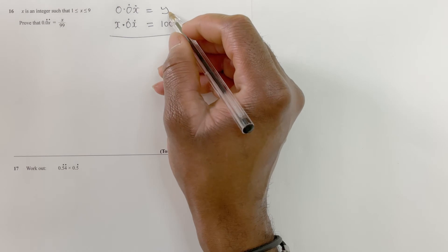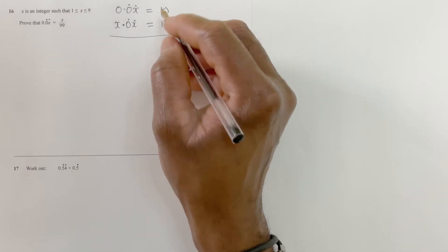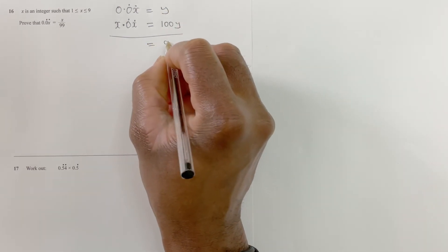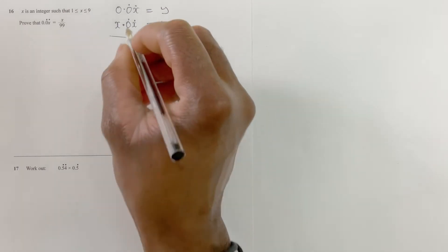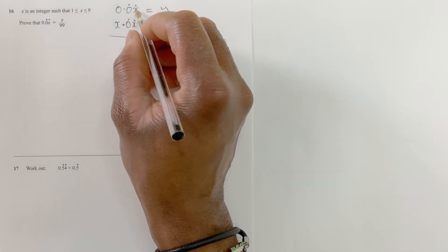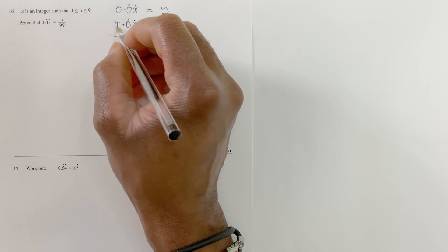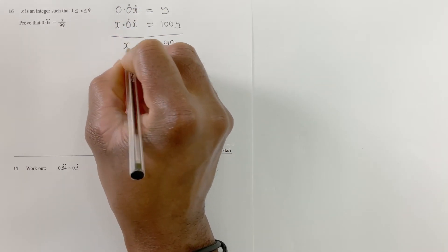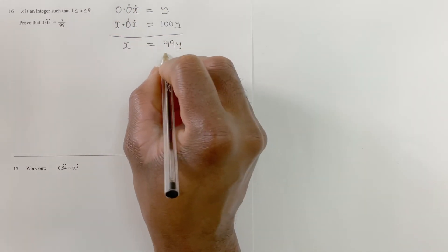Now take away 100y minus y, that will be 99y. x.0 recurring x minus 0.0 recurring x will be x. Divide both sides by 99.